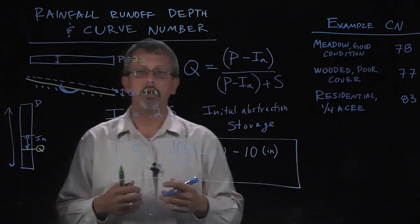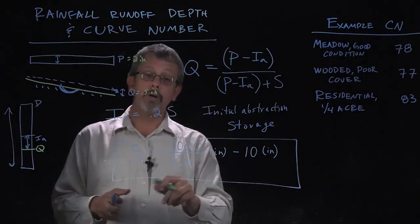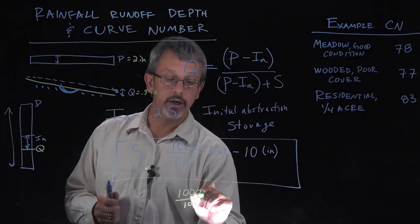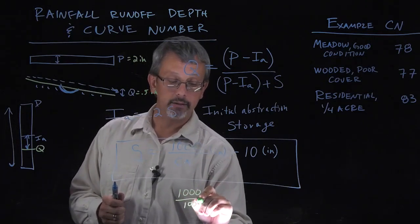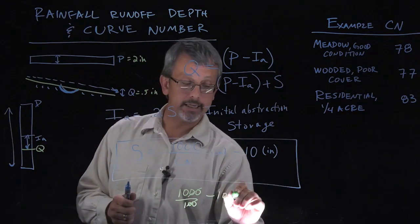We need to have something called a curve number. What is this curve number? When the curve number is equal to 100, we get 1000 divided by 100, which is just 10. And then 10 minus 10 is 0.